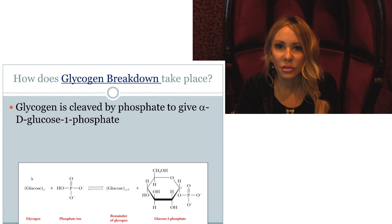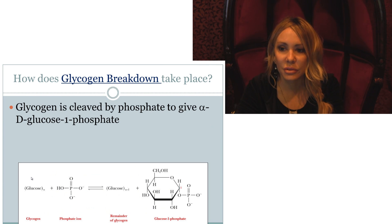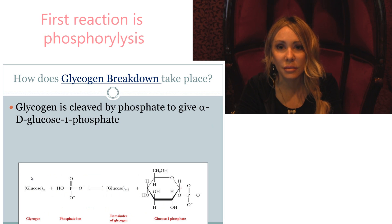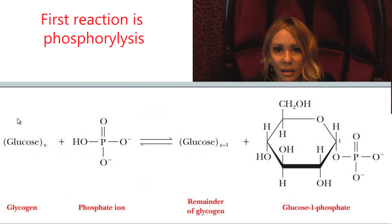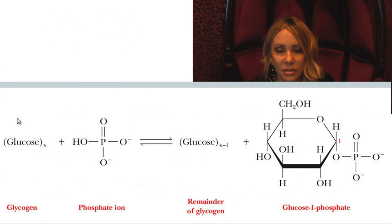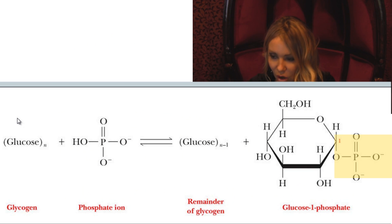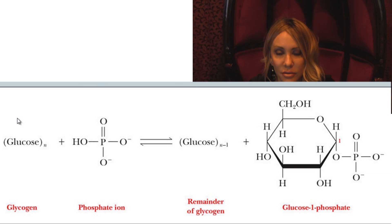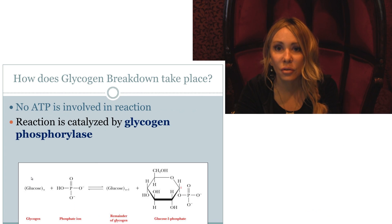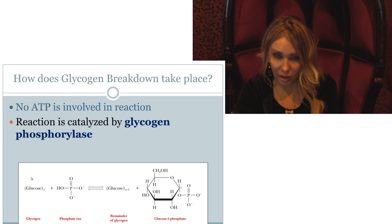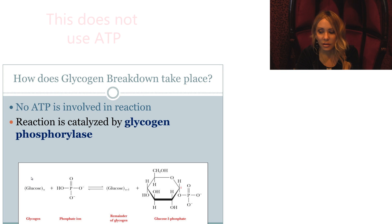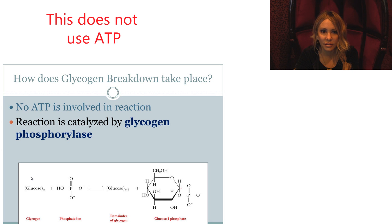In glycogenolysis, the first step is going to cleave the glucose molecules via phosphorylysis instead of hydrolysis. The product of the first reaction is glucose-1-phosphate — we're putting a phosphate on the C1 carbon of the glucose molecule. This is catalyzed by glycogen phosphorylase, which is under metabolic control. We're not using ATP to phosphorylate; we're using an inorganic phosphate ion that is already in the cell.